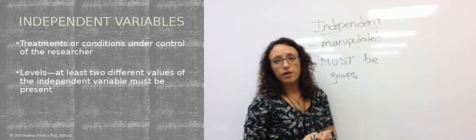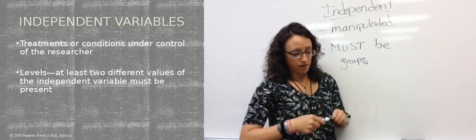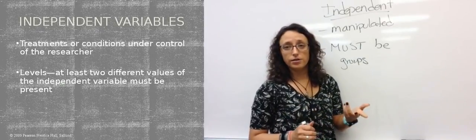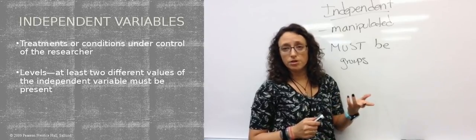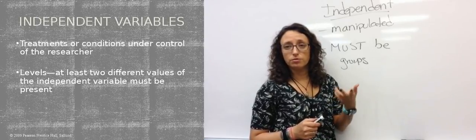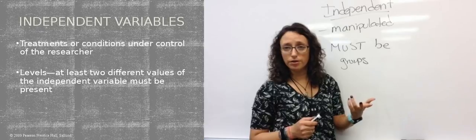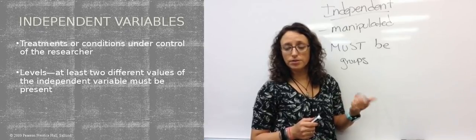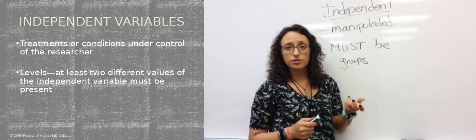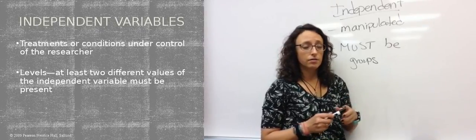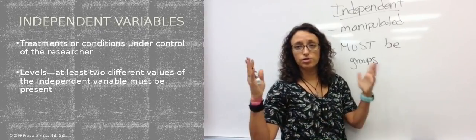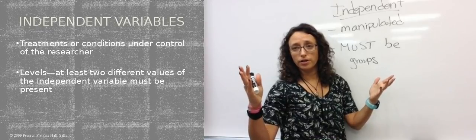Must be groups. So if you're looking at effect of exercise on weight, for example, the weight, as I mentioned before, is our dependent variable because we're measuring it. It can be made into a number. You could look at weight in pounds or kilograms. The independent variable, exercise, you could have people work out for 30 minutes a day or 60 minutes a day. So two groups for our independent variable in that example.